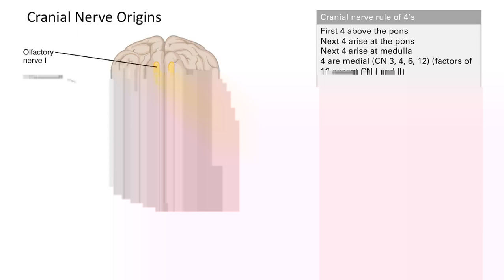There's a rule of fours that makes it easy. Four of them arise from above the pons — the first four. The next four arise at the pons, that's cranial nerves 5 to 8. And then the last four, cranial nerves 9 to 12, arise in the medulla.